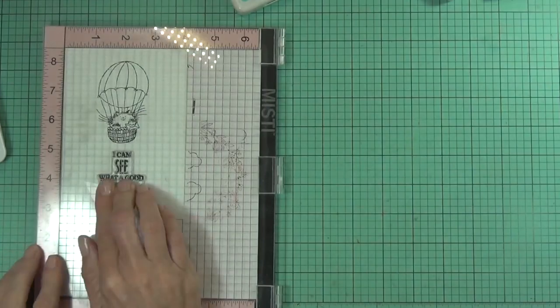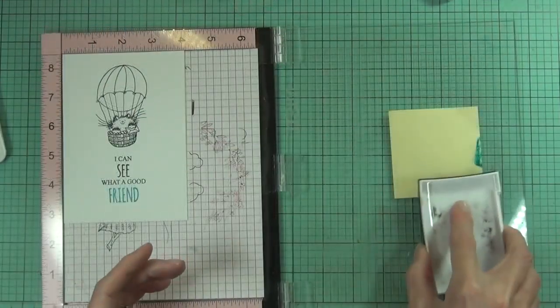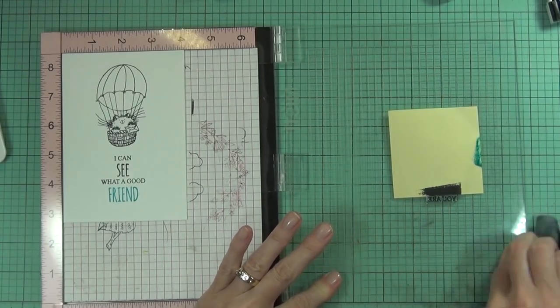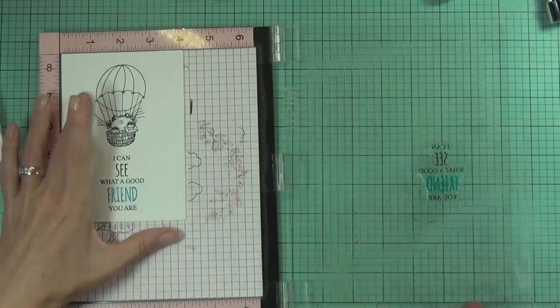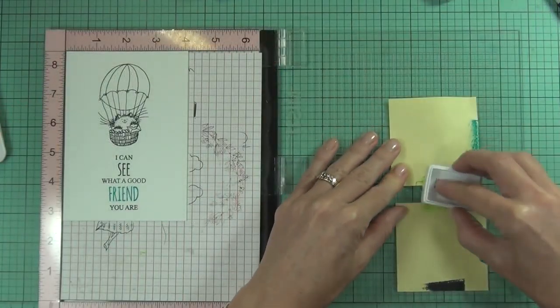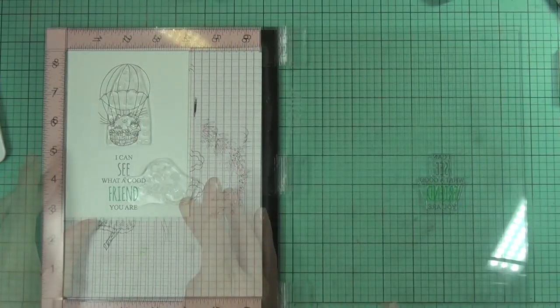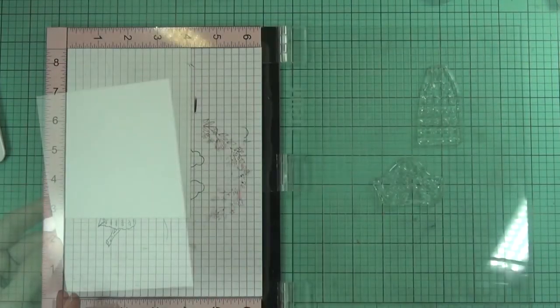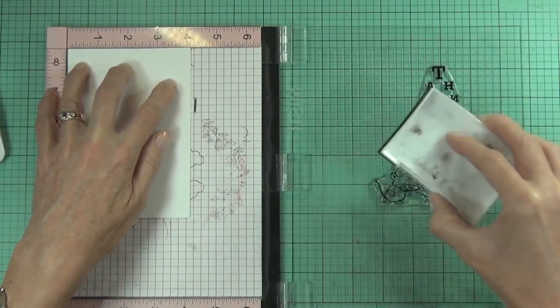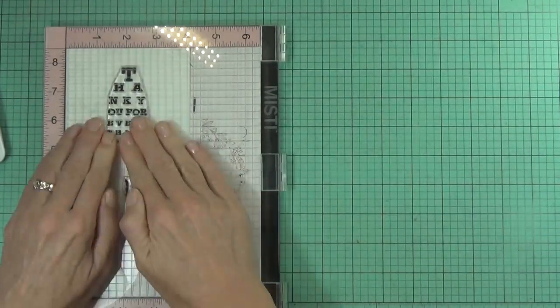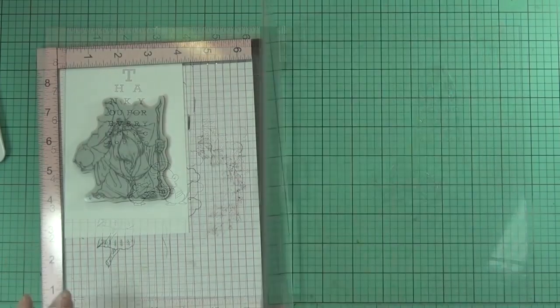This is where the Misty comes in really handy. Well it would have had I been really happy with the color that I chose. I just wasn't happy with the color so the Misty did come in handy because I could come back in and actually add another color over top and change the color that I stamped out the sentiment in.